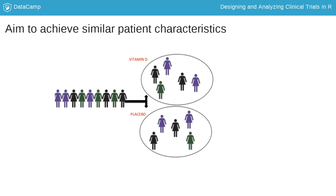In a randomized controlled trial we can assign women to receive either vitamin D or a placebo in a random fashion, and therefore balance the two groups with respect to patient characteristics. We can check this by presenting summary statistics of the patient characteristics collected at baseline for each of the treatment groups.